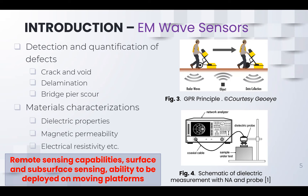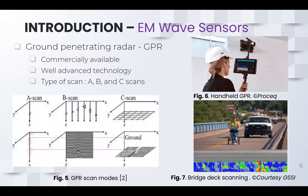We also have dielectric measurement network analyzers which we can use to characterize the electromagnetic properties of cementitious or construction materials. For GPR, as I said, it's commercially available and well advanced in terms of technology. We have basically three modes of scan: the A-scan, which is line scanning that gives you information in one direction; the B-scan, which gives you an image after scanning; and the C-scan, which gives you a volume that you can reprocess to get more information.